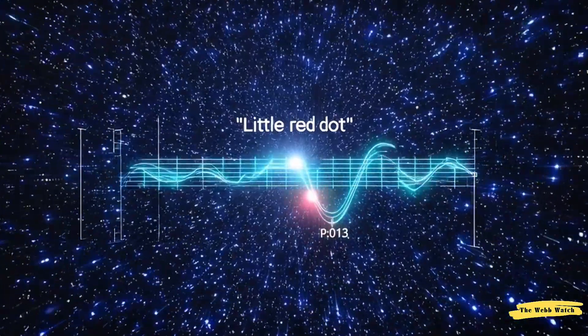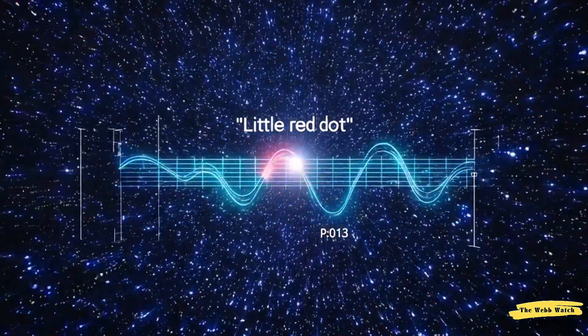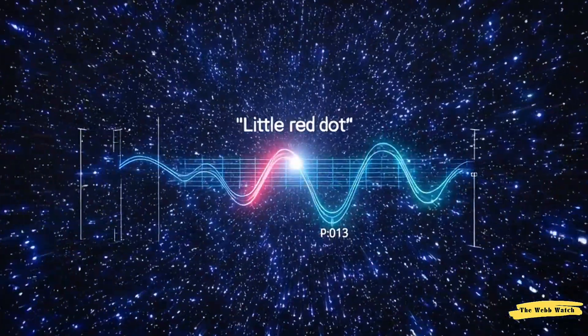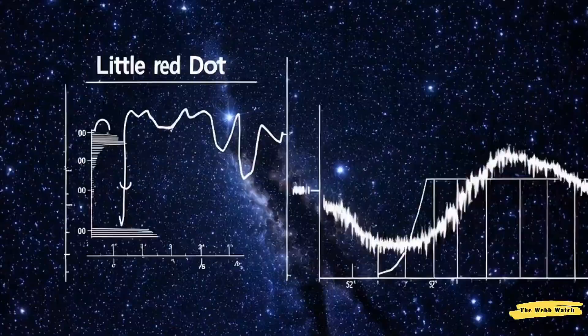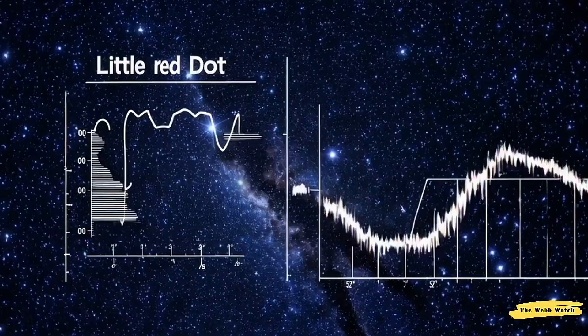Then, in July 2025, a new hypothesis emerged. Some little red dots could be primordial supermassive stars, possibly a million times the mass of the Sun, in their final moments before collapsing into black holes.